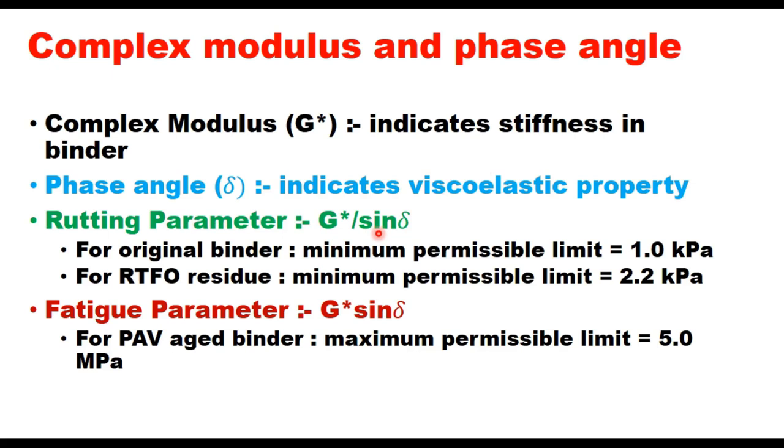These two parameters are used to define a rutting parameter G*/sin(δ) and this parameter is evaluated in two stages: for original binder and for short-term aged binder or RTFO residue. We evaluate this parameter on original binder as well as on RTFO residue and these are the minimum values specified for original binder and RTFO.